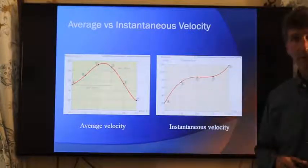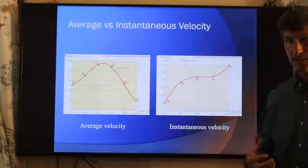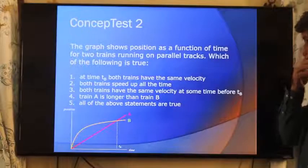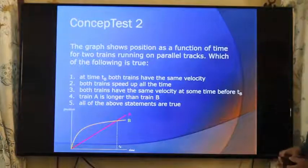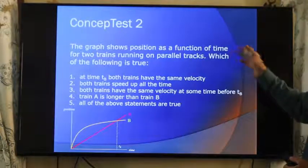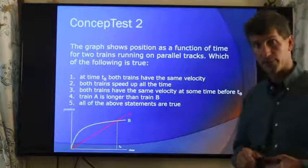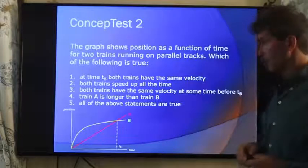So again, sort of like rise over run, but over a tangent line that passes through a point. That's sort of the visual difference there. The graph shows position as a function of time for two trains running parallel to the track, which of the following is true. Let's try to use some of what we know already.